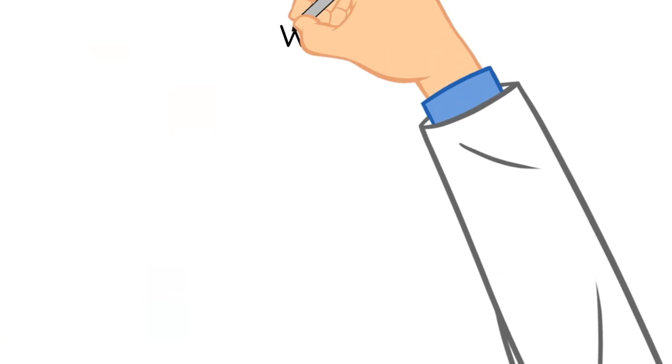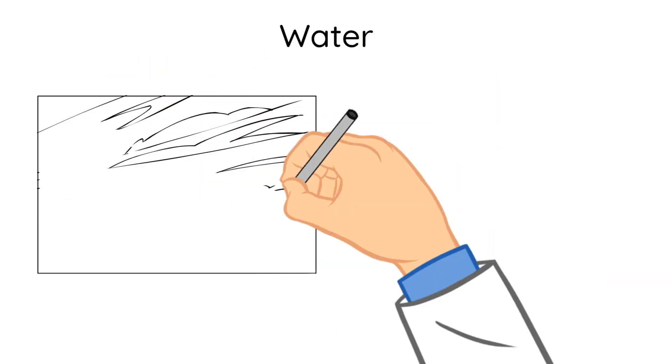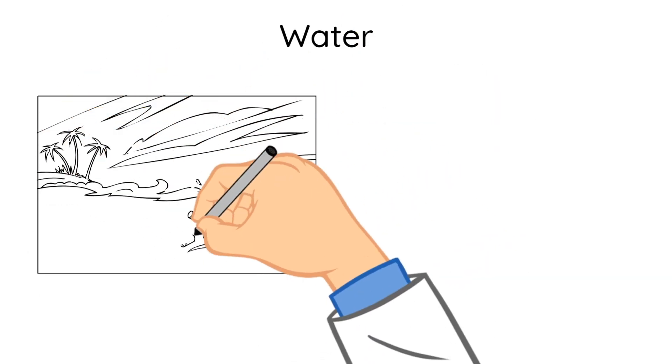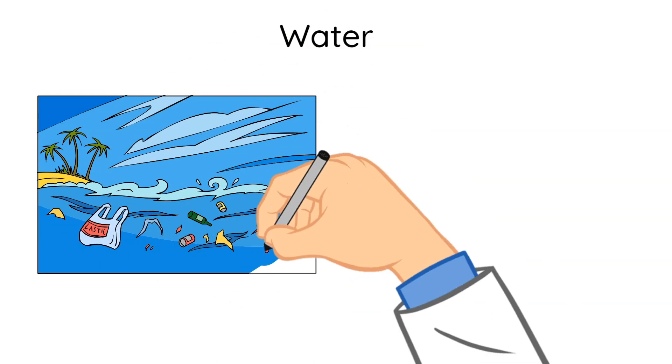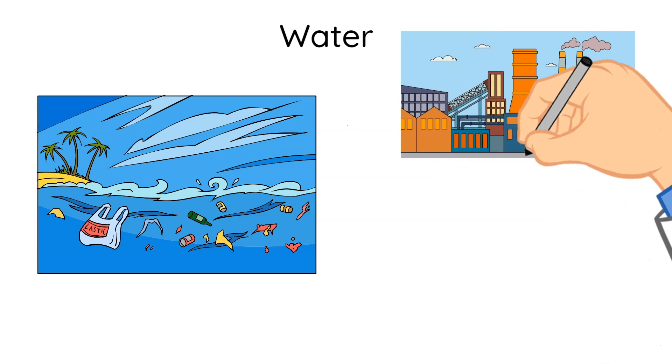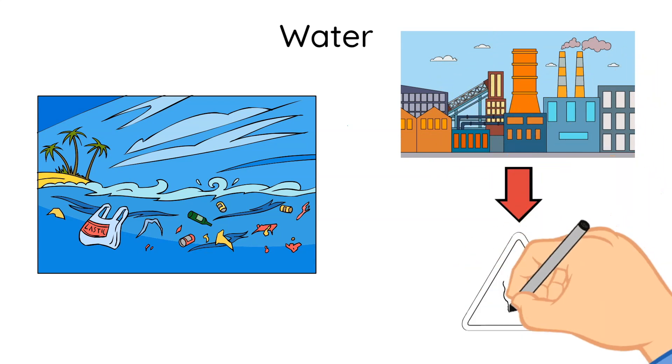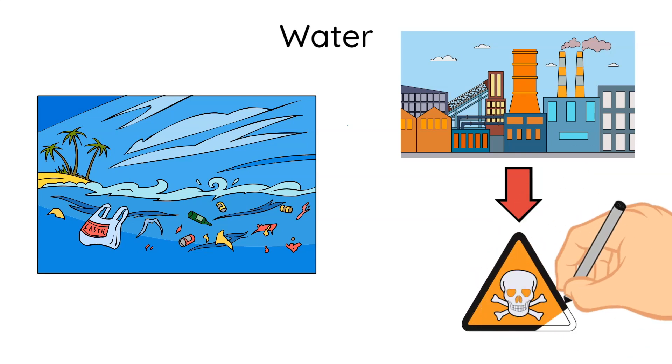Next up, let's talk about water pollution. When people dump garbage or sewage into water sources like oceans, lakes, and ponds, this is water pollution. Factories or cities also sometimes release oils or poisonous chemicals into water.